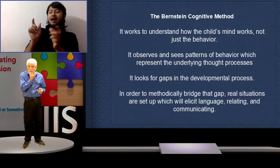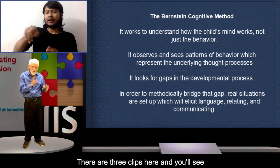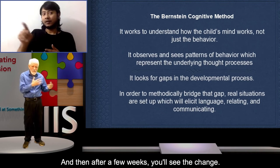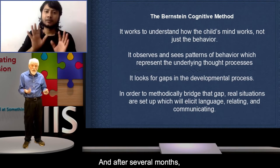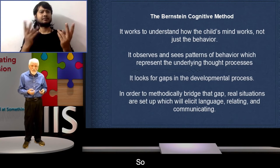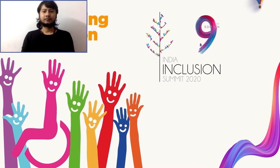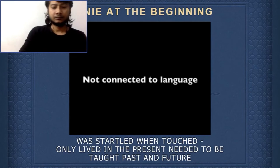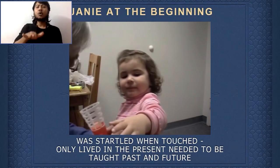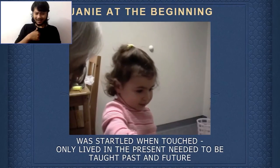Here's a child with no language in the beginning. There are three clips — you'll see bits of each. In the beginning there was no language; after a few weeks you'll see the change; and after several months — maybe ten months — you can't tell the difference between her and a typical kid. In the first clip, we see prompting around the word 'push it,' working to elicit the phrase as an action request.